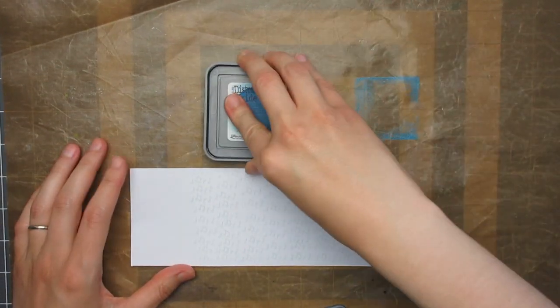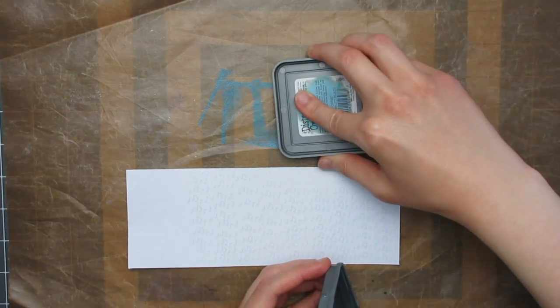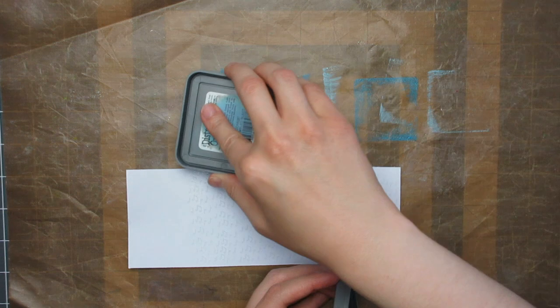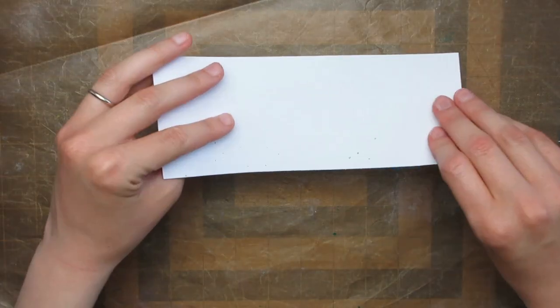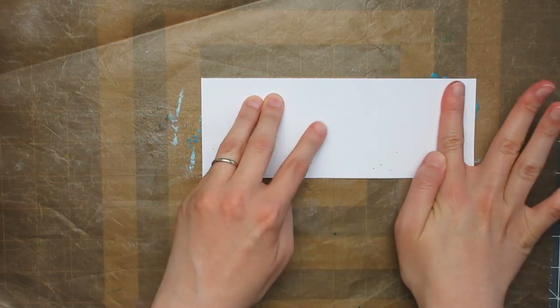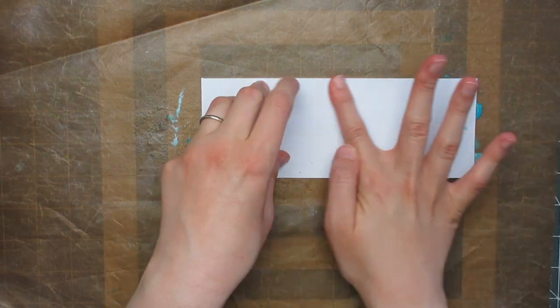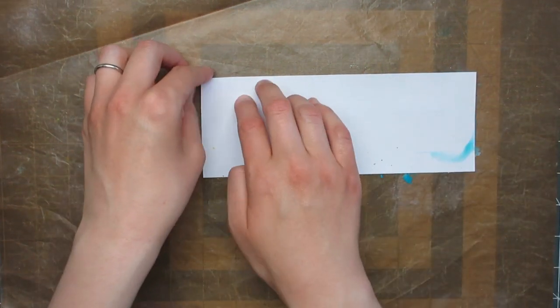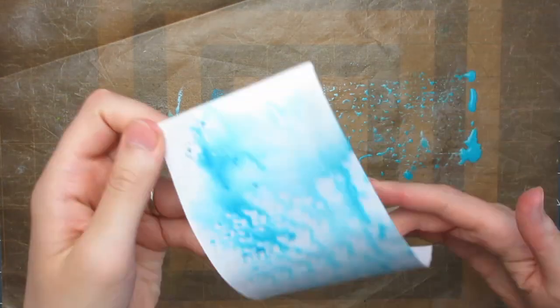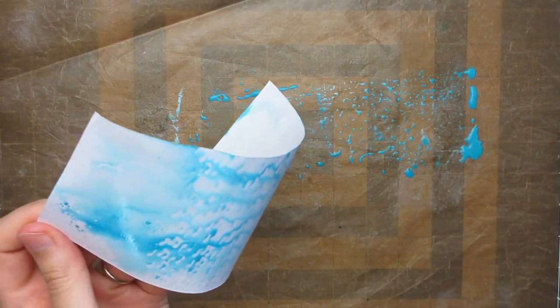To color in the image I'm going to do some ink smooshing for an easy watercolor background. I have smooshed distress oxides in Mermaid Lagoon and Tumbled Glass onto my craft mat and I'm going to spritz them thoroughly with water and bring the watercolor paper to the ink. I'll press it in well to pick up as much of the color as possible. It does warp the paper, but that doesn't matter too much at this stage. I'm then going to speed up the drying process with my heat gun.